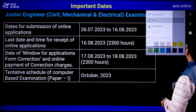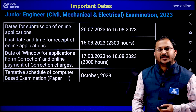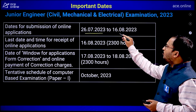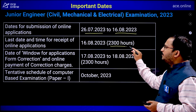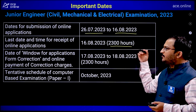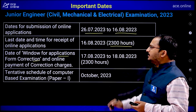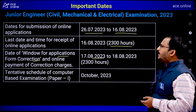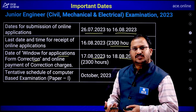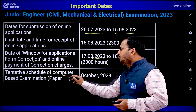Coming to the important dates: the online application window opened on 26 July 2023 and will close on 16 August 2023 at 11 PM. Application correction can be done online from 17 August 2023 to 18 August 2023 up to 11 PM, so there is a one-day correction window provided.